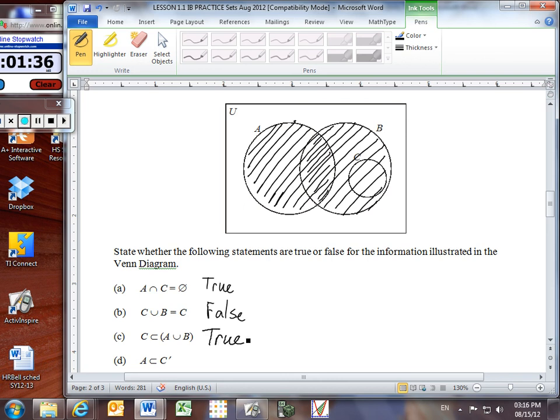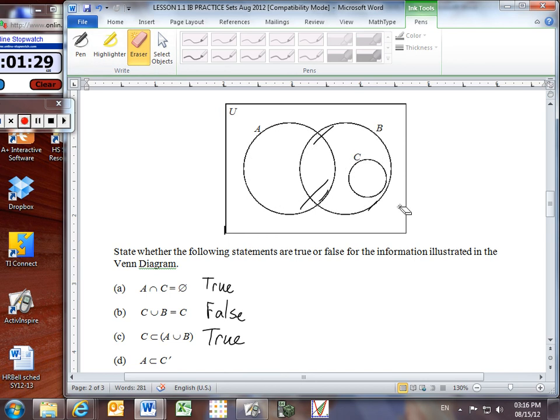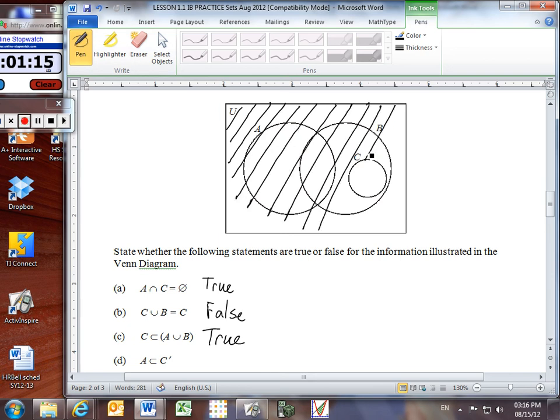And lastly, we want to determine, is A a subset of C prime? Okay, so is A a subset of C prime? First, let's figure out what C prime is. I'm going to shade everything outside circle C. What I'm shading right now, this is C prime, everything outside circle C. Is it true that our set A is entirely contained within this shaded region C prime that I just created? Yes! The shaded region is nearly everything, and it includes all of A. I did shade all of A as I shaded C prime. So A is entirely contained, and that is a true statement.